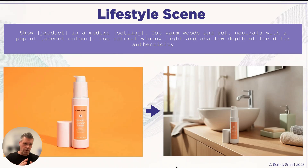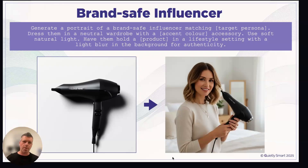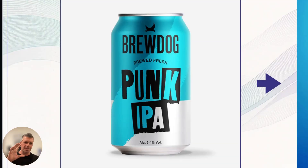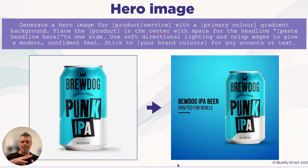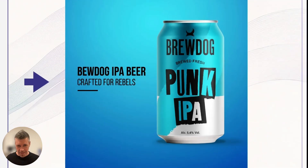The first one is pretty simple: taking a product and putting it into a lifestyle scene with the prompt 'show X product in a modern setting.' The next one combines images and people to create an influencer that looks like someone in your ideal customer profile — deciding who would buy the product and creating an image like that. The next one uses your brand colors to take a basic product image and create a simple hero image. We're keeping an eye on how good Nano Banana is at dealing with type — it's still not as good as ChatGPT. Here it said 'Boo Dog IPA Beer' instead of 'BrewDog,' for example.